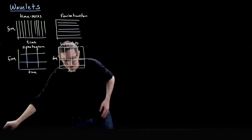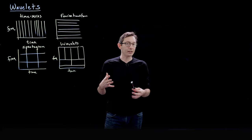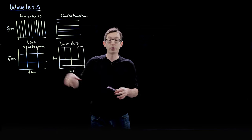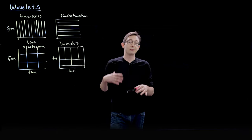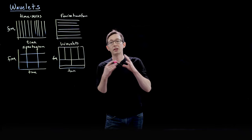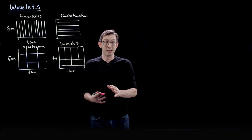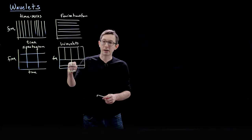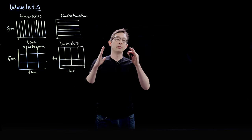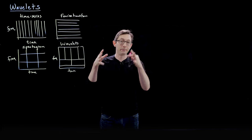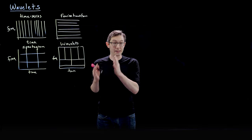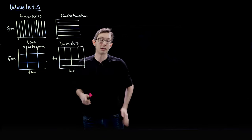The idea behind a wavelet decomposition is exactly the same as what you're used to seeing in the Fourier decomposition or the Gabor transform. We're going to take some signal — some time series or some spatial data — and project it onto an orthogonal basis. But in the wavelet transform that orthogonal basis is not just going to be sines and cosines; it's going to be a hierarchy of orthogonal functions that get smaller and smaller in time or in space — little windows in time and space.